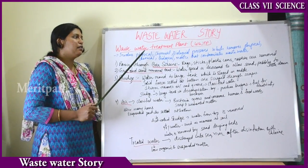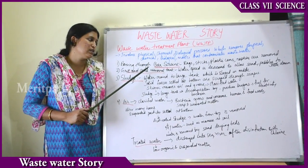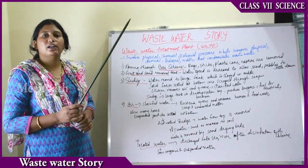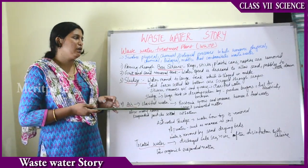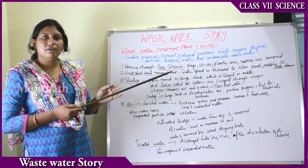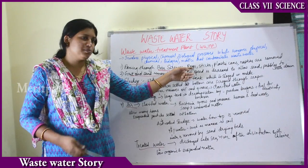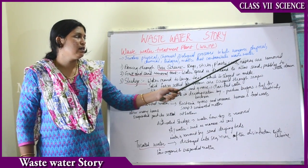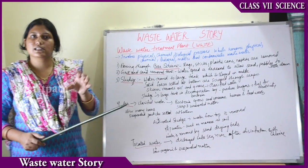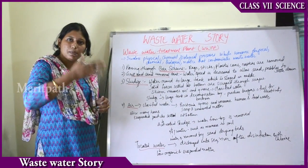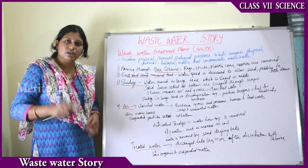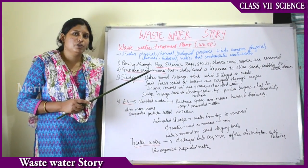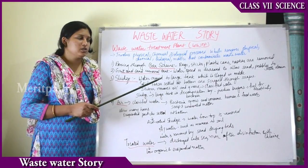The first step in wastewater treatment is passing water through a bar screen. Water is flowed through this metal bar screen at great pressure. The bar screen removes rags, waste old cloths, sticks, plastic cards, napkins, and all large solid things. Through the passage of the bar screen, big solid substances are removed.